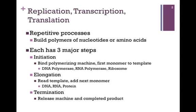The processes of replication, transcription, and translation are all repetitive processes. We're building polymers of either nucleotides or amino acids by adding monomers in a repetitive fashion. Each has three major steps. In the process of initiation, the molecular machine binds to the template and associates with itself the first monomer needed to form the polymer. In replication, that machine is DNA polymerase; transcription involves RNA polymerase, and translation involves the ribosome.